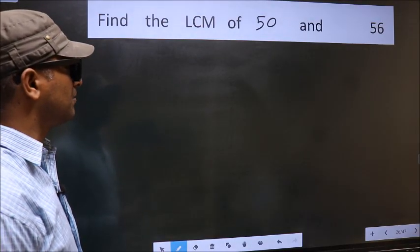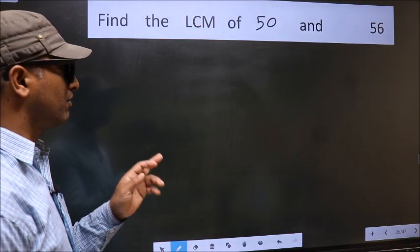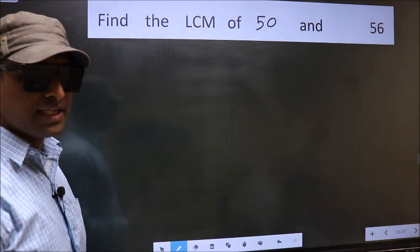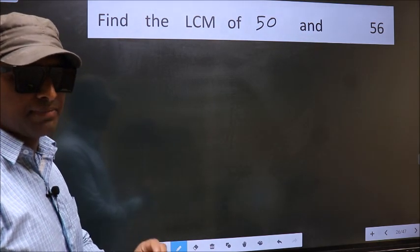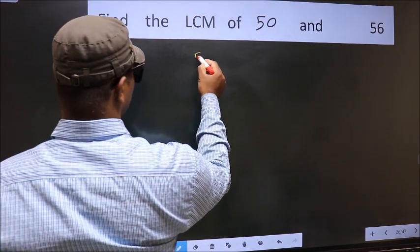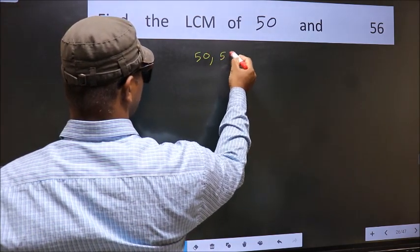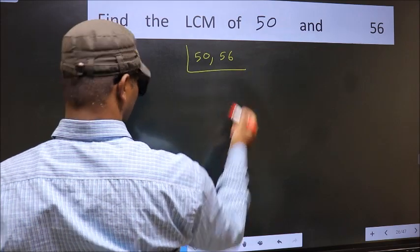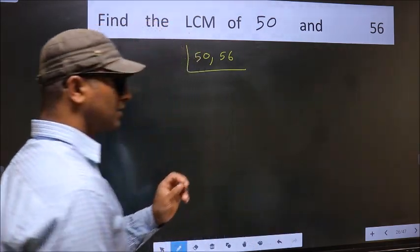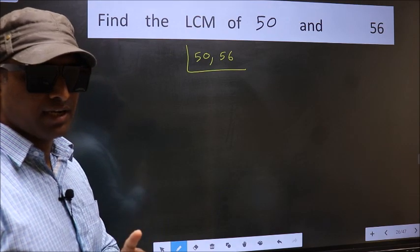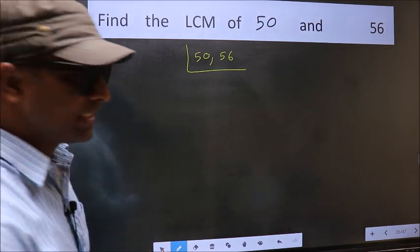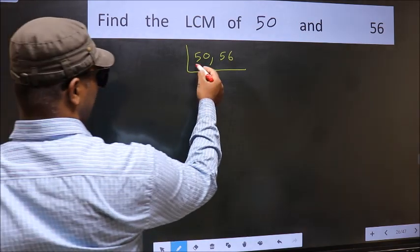Find the LCM of 50 and 56. To find the LCM, first we should frame it in this way: 50, 56. This is your step one. Now you should focus on the first number, which is 50.